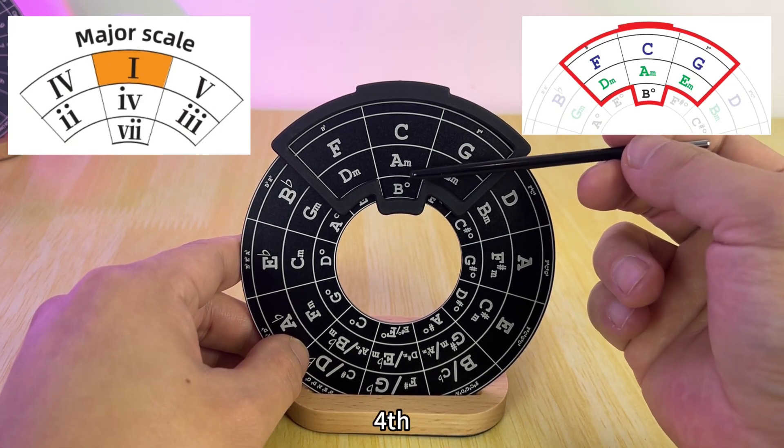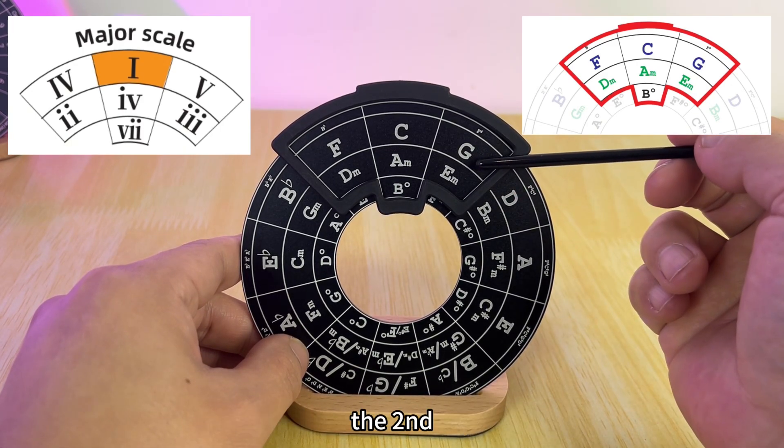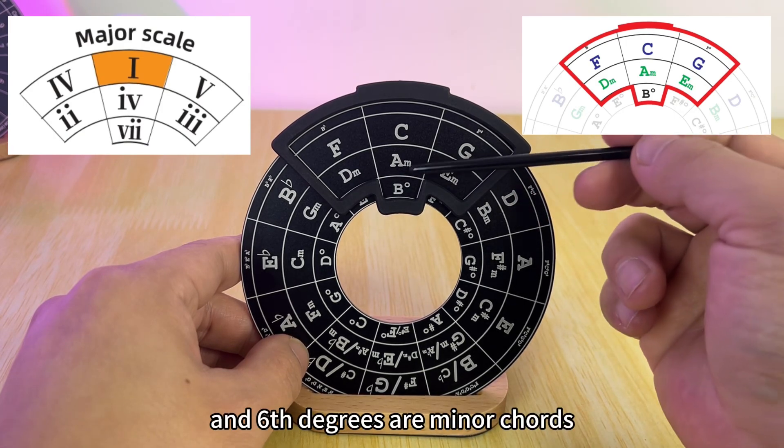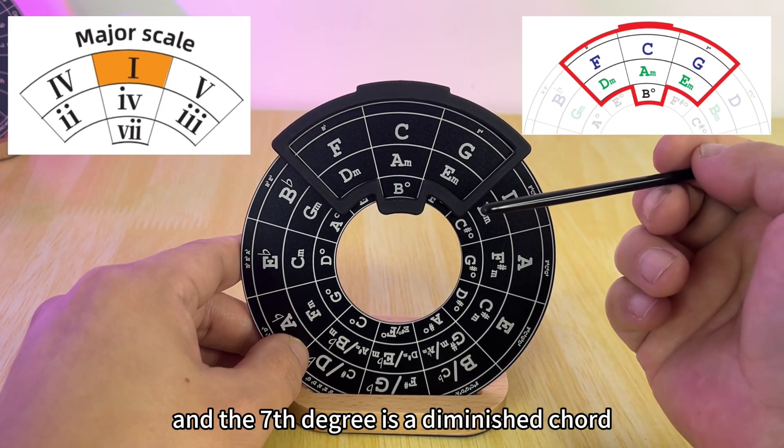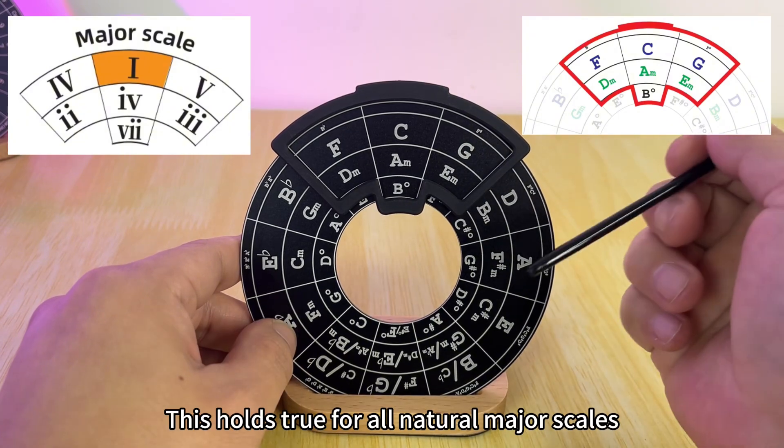In every key, the first, fourth, and fifth degrees are major chords, the second, third, and sixth degrees are minor chords, and the seventh degree is a diminished chord. This holds true for all natural major scales.